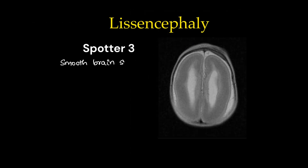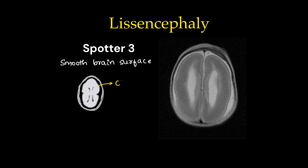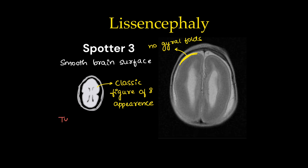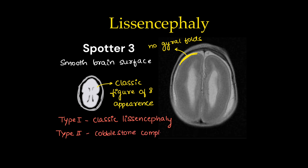Spotter 3 is an easy one — this is lissencephaly. There is a smooth brain surface without any gyral folds. This is detected antenatally. Classically we have a figure-of-eight appearance when taken along sylvian fissure sections. No gyral folds are seen here. Type 1 has classic lissencephaly with the figure-of-eight appearance, and Type 2 is cobblestone complex, which will have microgyria.